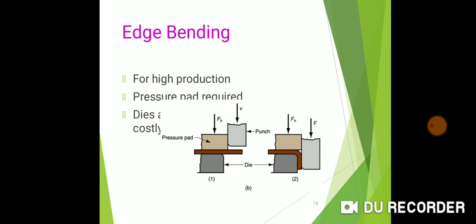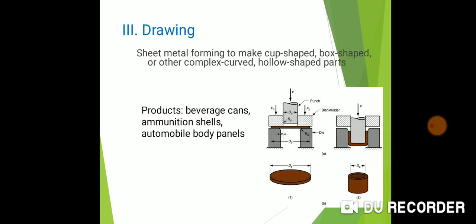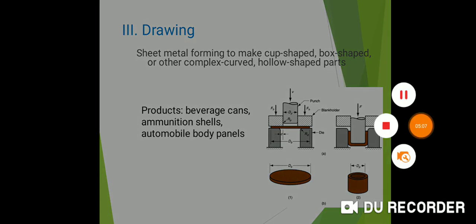The first figure shows the die at bottom is fixed and top is movable. Force is applied at the end of the object. This is called edge bending. This is the spring back in bending drawing. The next class will discuss about drawing.